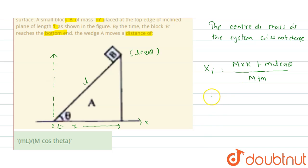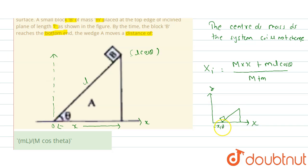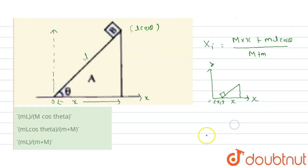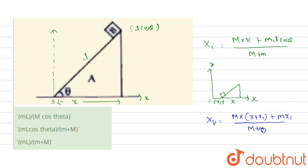Now students, let us consider the later position. The wedge has moved a distance X1, so the wedge A is now at position X plus X1 from the origin. Block B has reached the ground and its distance from the origin is X1. So we can write the final center of mass X coordinate as: capital M multiplied by (X plus X1) plus small m multiplied by X1, whole divided by capital M plus small m.